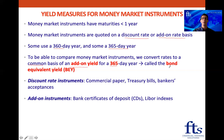The common basis the financial world has decided upon is the add-on yield for a 365-day year — they call this the bond equivalent yield. Common discount rate instruments include commercial paper, treasury bills, and bankers' acceptances. The add-on instruments include bank certificates of deposit and LIBOR indexes.